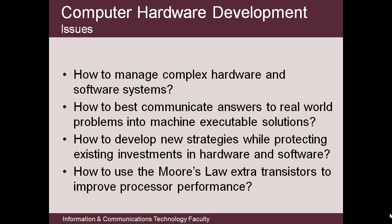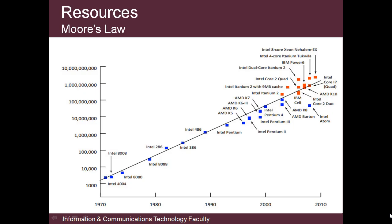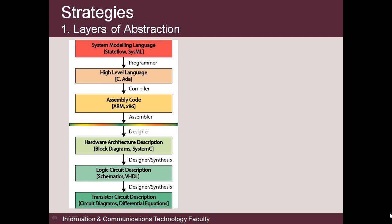The principal issue is how to best deploy the ongoing increases in transistor count to improve computer performance for real applications. Following Professor Katz of Stanford University, these are the principal strategies that are being deployed to achieve this, as embodied in processors such as those shown here from the early Intel 8080 to the latest core designs. The first issue is how best to handle a complex system. The general systems approach is to represent it using appropriate model descriptions that can then be used with optimization strategies to try to improve performance, and simulation tools to evaluate results.